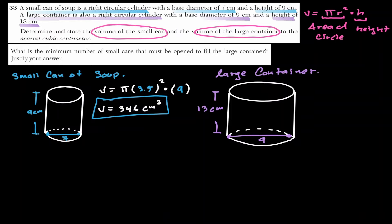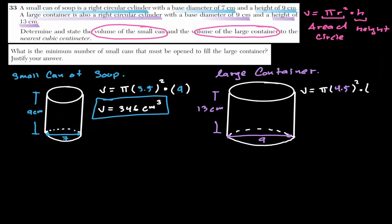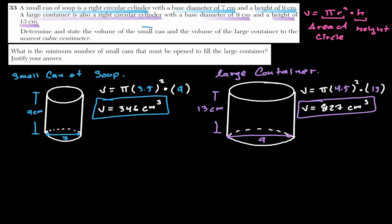For the large container, the radius is half of 9, which is 4.5. The volume is π(4.5)²(13), which gives approximately 827 cubic centimeters. The volume of the small can is 346 cm³ and the large container is 827 cm³.